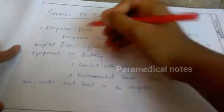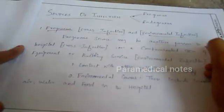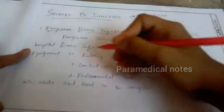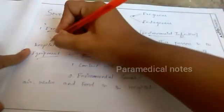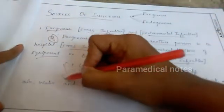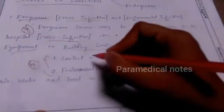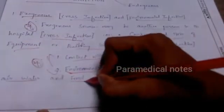The second point is source of infection. There are two simple types: exogenous and endogenous. Exogenous includes cross infection and environmental infection. Cross infection is getting infection from another person. Environmental infection is very simple — from the environment like floors, building surfaces, and equipment.